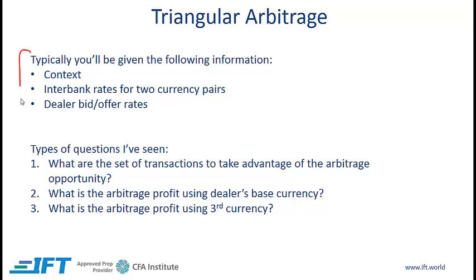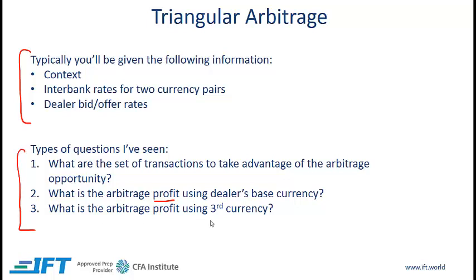With a question there are going to be three parts: number one you'll be given some context, then you will be given interbank rates for two currency pairs, and you'll be given dealer bid-offer rates. In terms of types of questions, here are three broad categories: you might be asked what are the set of transactions to take advantage of the arbitrage opportunity, or you might be asked to calculate the arbitrage profit where you are given the dealer's base currency, and a third scenario is where you are asked to calculate the arbitrage profit using a third currency.